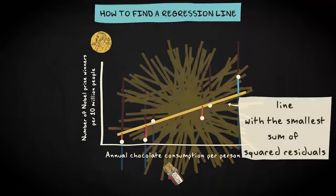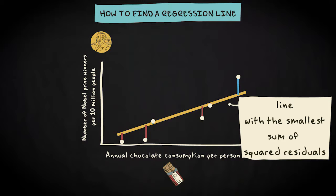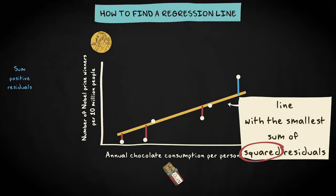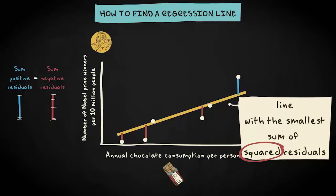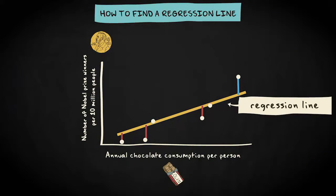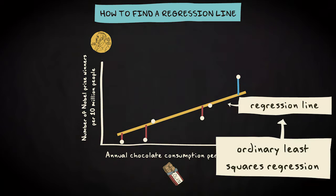Eventually you choose the line for which the sum of the squared residuals is the smallest, and that's the regression line. Why squared residuals? Because positive and negative residuals cancel each other out — the sum of the positive residuals (the blue lines) is exactly as big as the sum of the negative residuals (the red lines). The best fitting line is called the regression line, and the method is called ordinary least squares regression, which refers to the way we have found the line.